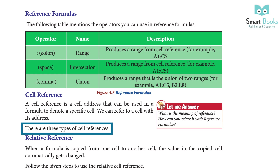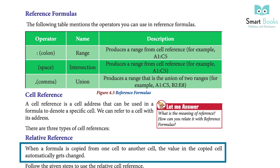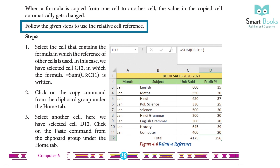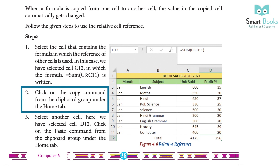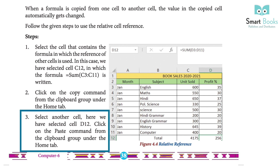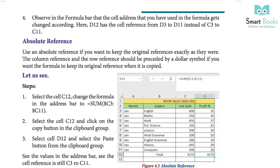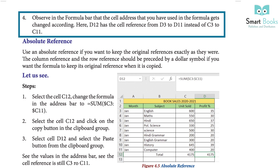There are three types of cell references. Relative reference: when a formula is copied from one cell to another, the value is automatically changed. To use relative cell reference: Step 1 — select the cell containing the formula; here we selected cell C12, which contains =SUM(C3:C11). Step 2 — click Copy from the clipboard group under the Home tab. Step 3 — select cell D12. Step 4 — click Paste. Observe that the cell address in the formula changes: D12 now has the reference D3:D11 instead of C3:C11.